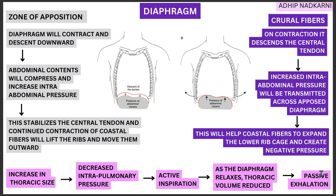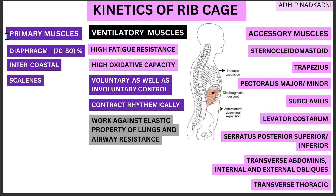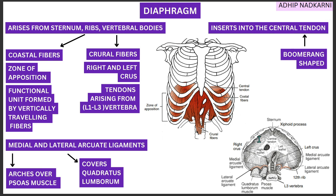Now that we've understood the topic, let's quickly summarize. We started with all the ventilatory muscles to be covered in future videos, but focused on the diaphragm, which has high fatigue resistance, high oxidative capacity, voluntary and involuntary control, and works against the elastic properties of the lungs and airway resistance. The diaphragm originates from the ribs, vertebrae, and sternum, and inserts into the central tendon.